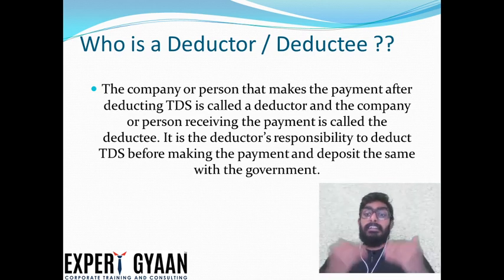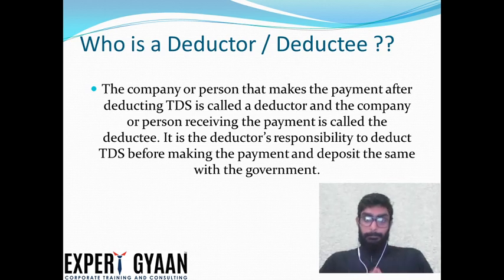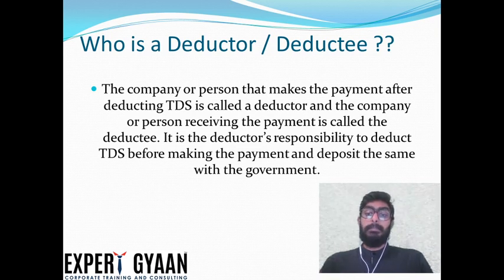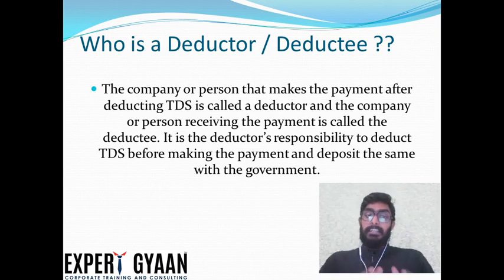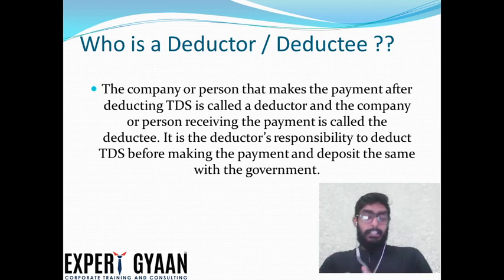The company or person receiving the payment is called a deductee. It is the deductor's responsibility to deduct TDS before making the payment and deposit the same with the government.